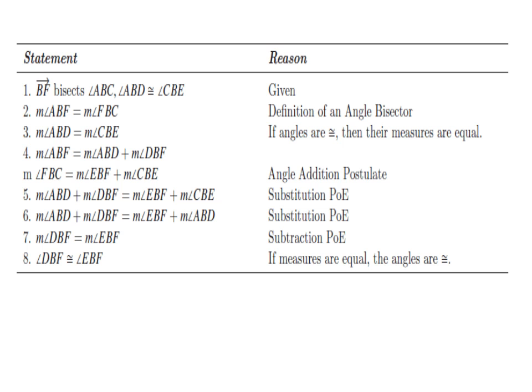Statement 4 is the angle addition postulate, which states: the measure of angle ABF equals the measure of angle ABD plus the measure of angle DBF, and the measure of angle FBC is equal to the measure of angle EBF plus the measure of angle CBE.